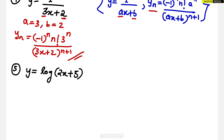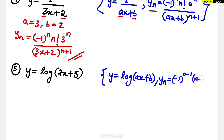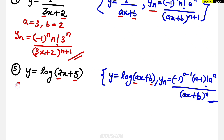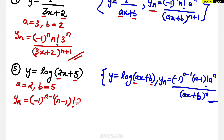The fifth problem is y = log(2x+5). This relates to the formula y = log(ax+b), whose nth derivative is (-1)^(n-1) · (n-1)! · a^n / (ax+b)^n. Here a = 2 and b = 5. So the nth derivative is (-1)^(n-1) · (n-1)! · 2^n / (2x+5)^n. This is the final answer.